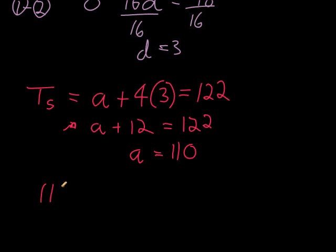And therefore I have it. My first term is 110. My second term I get by adding my constant difference, 3, so 113. My next term would be 116 by adding another 3, and that is my arithmetic sequence.